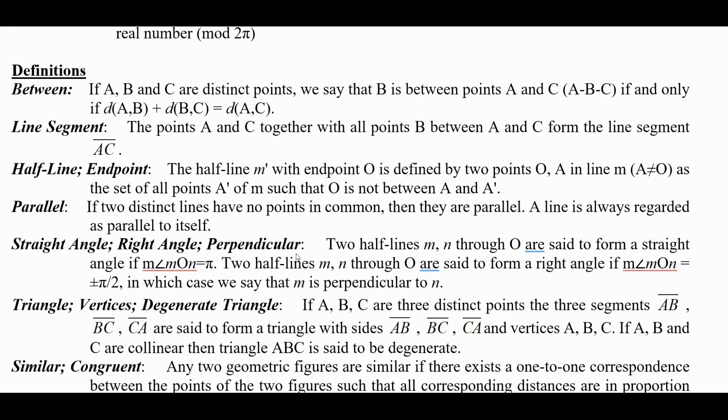Then he has some definitions here. Between: if A, B, and C are distinct points we say that B is between points A and C, written as A-B-C, if and only if the distance from A to B plus the distance from B to C equals the distance from A to C.